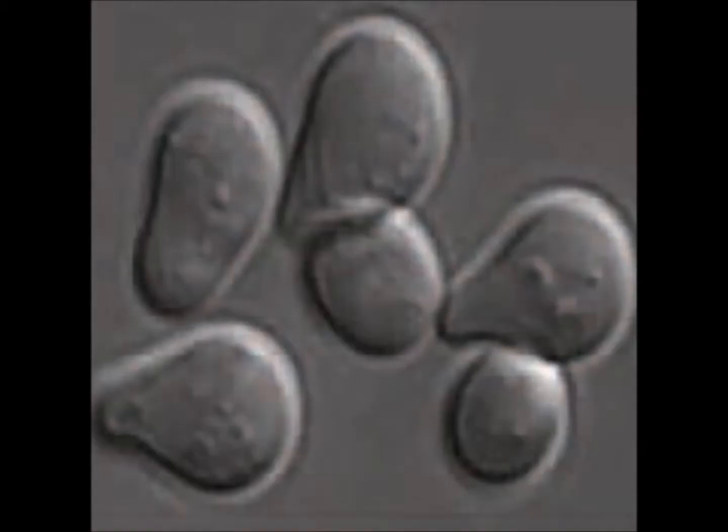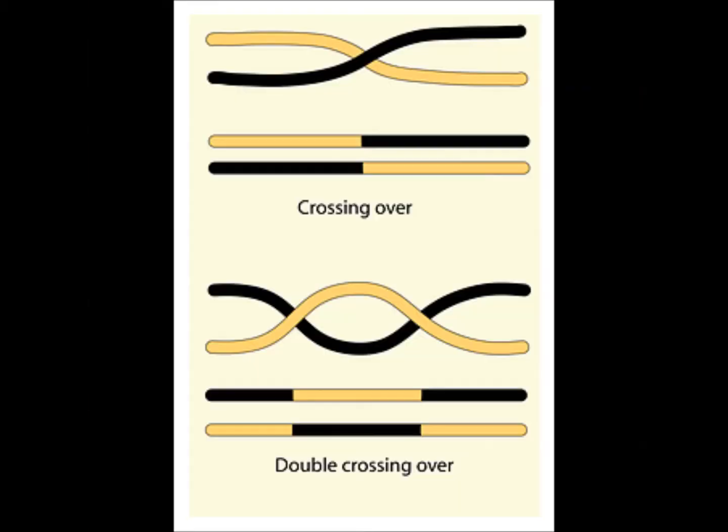The yeast cells undergo division in order to increase the population and pass on evolutionary traits. The division process is where pairs of chromosomes separate to give a new combination of genetic traits.